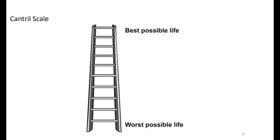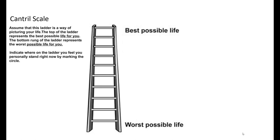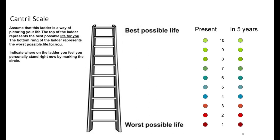To measure this well-being, Gallup uses something called the Cantrell Scale. It's a rather famous scale. Here's how it works: it presents respondents with a ladder and asks the following question — assume that this ladder is a way to picture your life. At the top of the ladder represents the best possible life for you, and the bottom rung represents the worst possible life for you. Then respondents are asked to indicate where they see themselves on the ladder both now and in the next five years. Gallup says individuals who currently score themselves between 7 and 10 and imagine themselves at an 8 to 10 in the next five years constitute the group they call thriving.